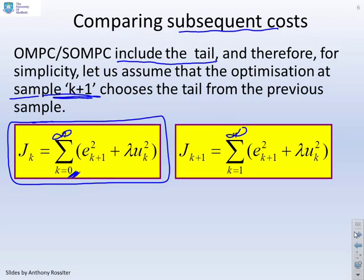So here's the J I got at the first sample. And here's the J that I get at the next sample. Now the key thing to notice, the only difference between these two, is that this one says k equals 0 to infinity, and this one says k equals 1 to infinity. But otherwise, because we've assumed we're using the tail, they've got identical terms.